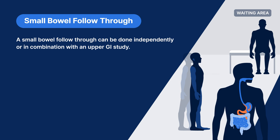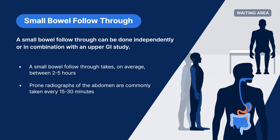A small bowel follow-through can be done independently or in combination with an upper GI study. It takes, on average, between two to five hours. Prone radiographs of the abdomen are commonly taken every 15 to 30 minutes, though the time between images can vary with patient anatomy and radiologist or RRA preference. The patient will wait in a waiting area or be asked to walk around between images to keep the contrast moving through the intestines.